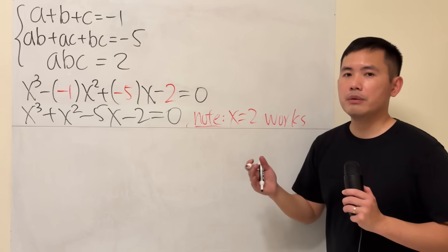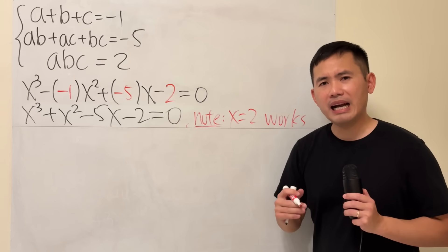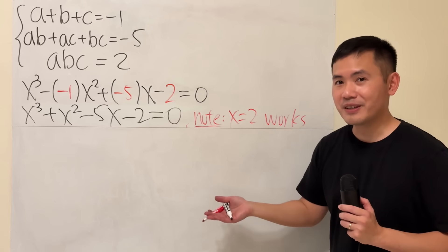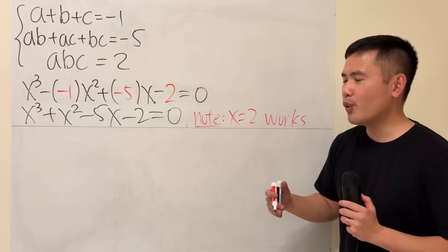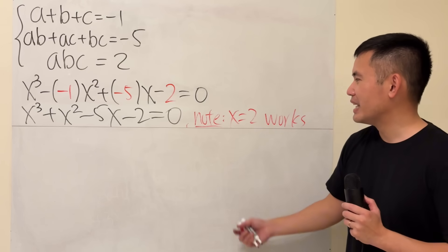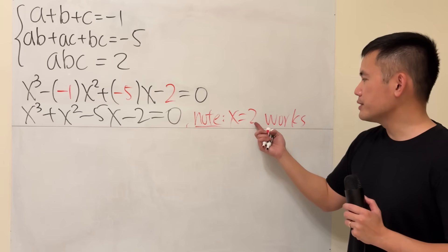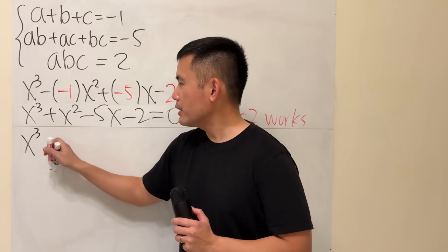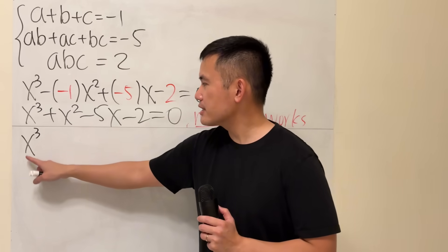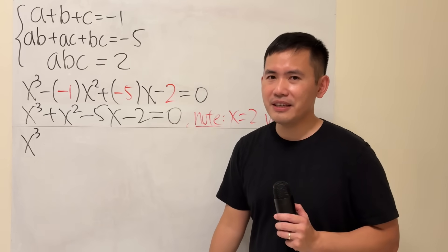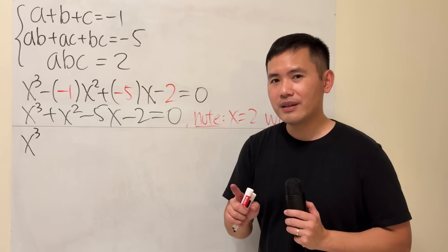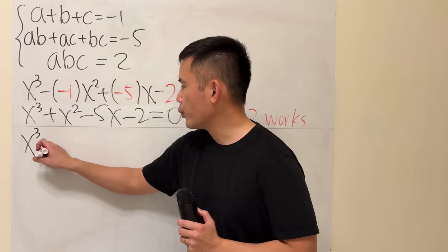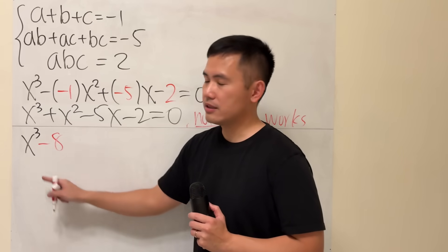And then you can just do the synthetic division. But I have done that with you guys so many times. Today, I'll show you guys something that's slightly fancier, or something that's a little bit more sophisticated. Here's the deal. Since we know X equals 2 works, I am going to look at the X to the third power term. But do not subtract 2, because X cubed minus 2 cannot factor that easily. However, if you do 2 cubed, it's 8. If we put X cubed with minus 8 together, this is so much easier to factor.